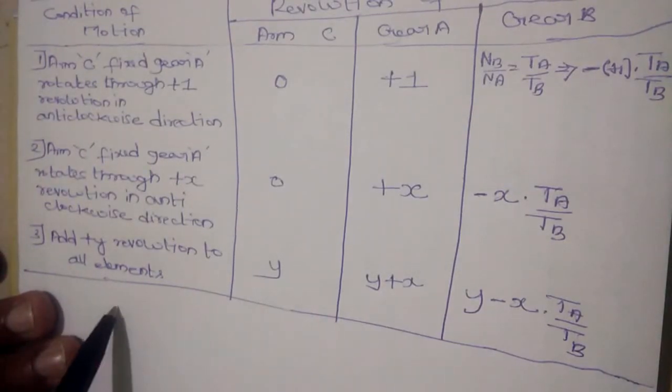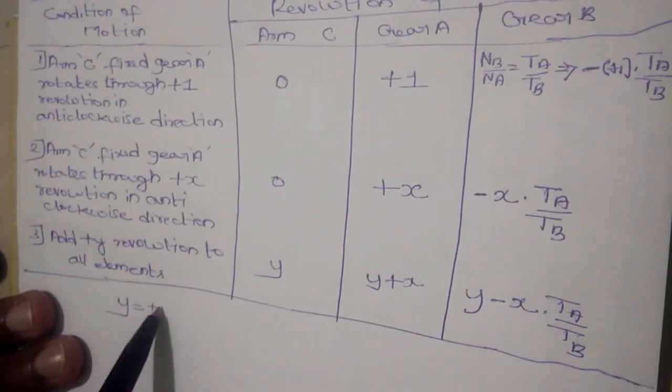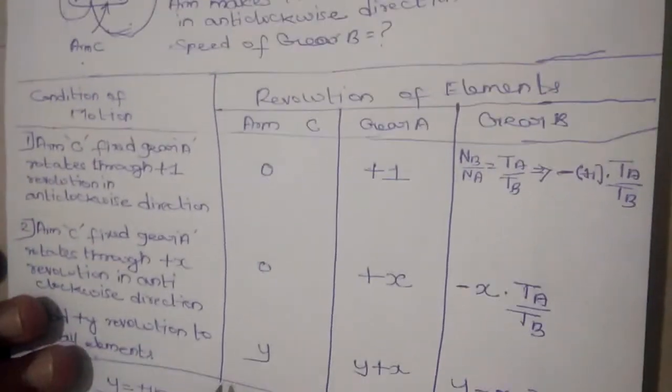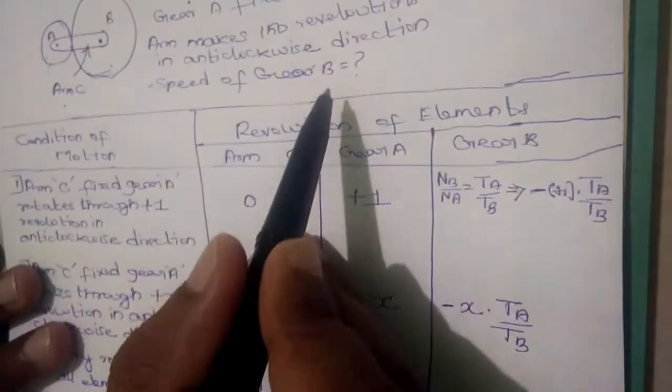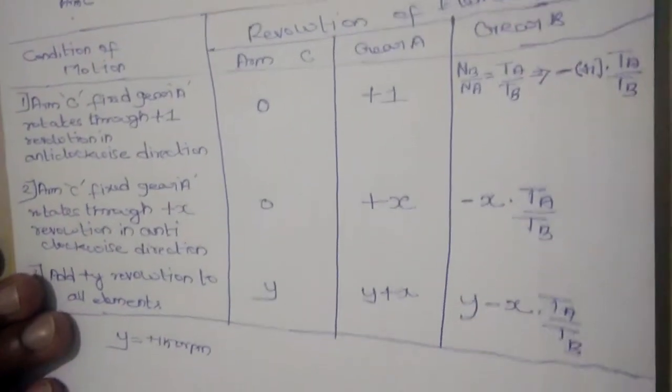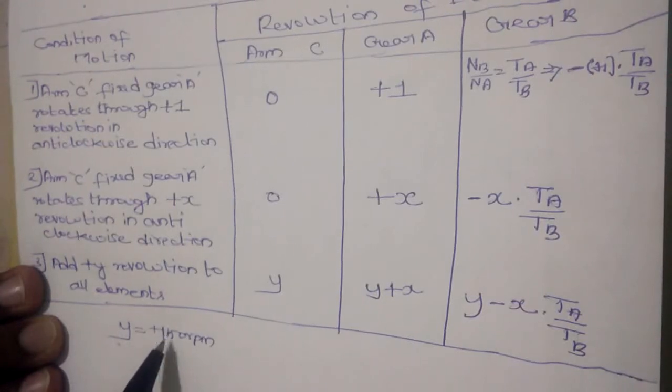Now, y is equal to 150 RPM. We know arm C makes 150 revolutions in anticlockwise direction. Now, the revolution of arm is y which is equal to plus 150 RPM.